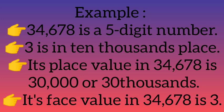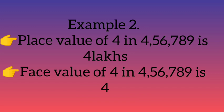The face value of a digit is the digit itself — it remains the same regardless of its position. So the face value of 3 in 34,678 is just 3. In 4,56,789, the digit 4 is in the lakhs place, so its place value is 4,00,000, but its face value is 4. The place value of 5 in this number is 50,000, and the face value is 5.